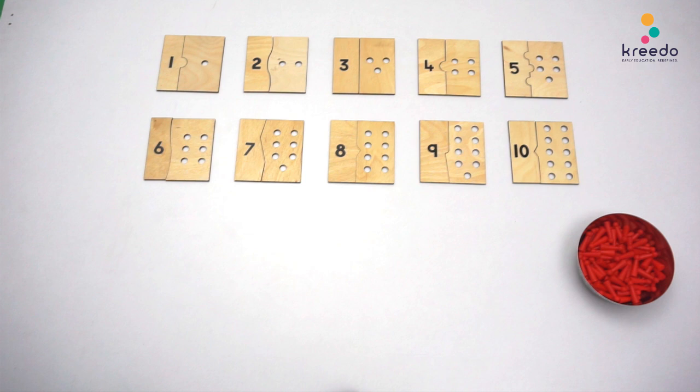Procedure: Ask the child to complete the puzzle from 1 to 10 and keep them on the place of presentation. Keep a bowl of Skittles near the place of presentation.